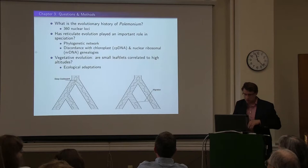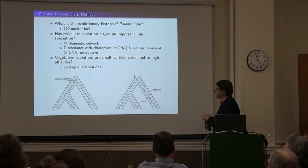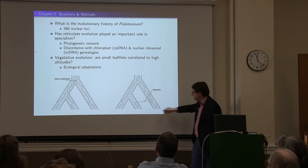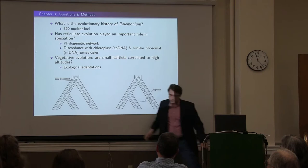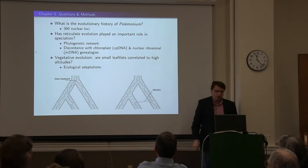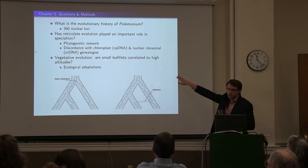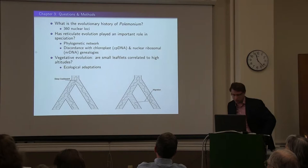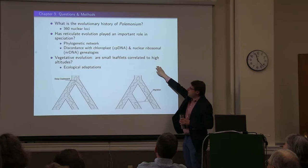In terms of past knowledge about phylogenetic relationships in Polemonium, we essentially just know that species are monophyletic, but we don't know how the species are related. I wanted to address the evolutionary history of Polemonium using 360 nuclear loci. Specifically, there are multiple causes of gene tree discordance — I'm testing between two here: incomplete lineage sorting, where by random chance gene copies have a different history than the species; or migration and reticulate evolution, where unrelated lineages exchange genes. I'll also look at discordance between the chloroplast tree and the nuclear ribosomal tree, and briefly look at vegetative evolution.